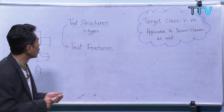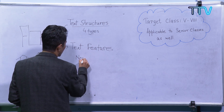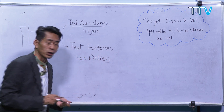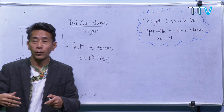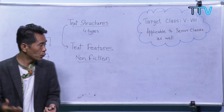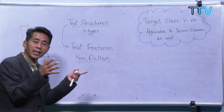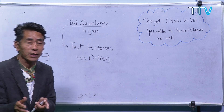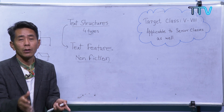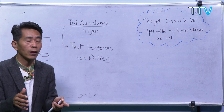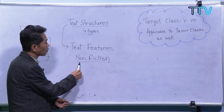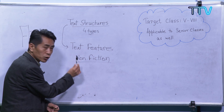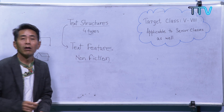Non-fiction includes all textbooks — science, social, history, and many subjects. In English, which is a textbook, you may come across both fiction and non-fiction, because you have stories, poems, and prose. When we talk about reference books, encyclopedias, journals, and magazines — these are called non-fiction. In non-fiction, there are different types of texts.